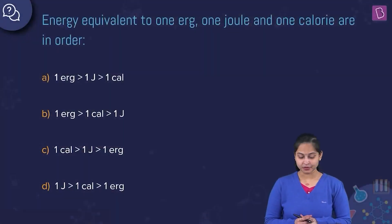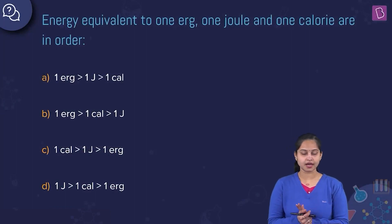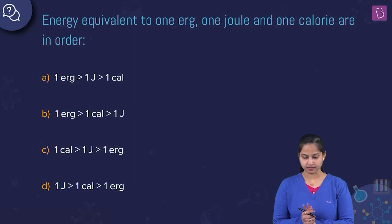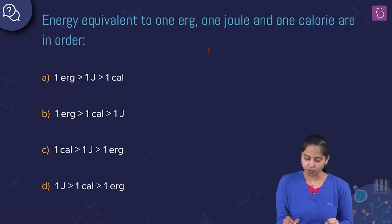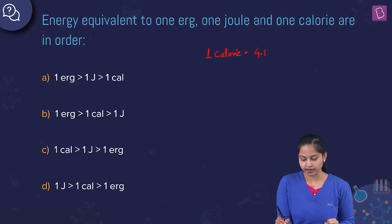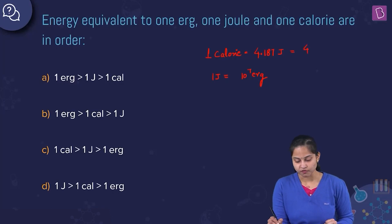The question is: energy equivalent to 1 erg, 1 joule, and 1 calorie — what is the order? It's a very simple question. We know that 1 calorie is equal to 4.187 joules, and 1 joule is equal to 10 raised to power 7 erg, which means 4.187 joules is equal to 4.187 into 10 raised to power 7 erg.